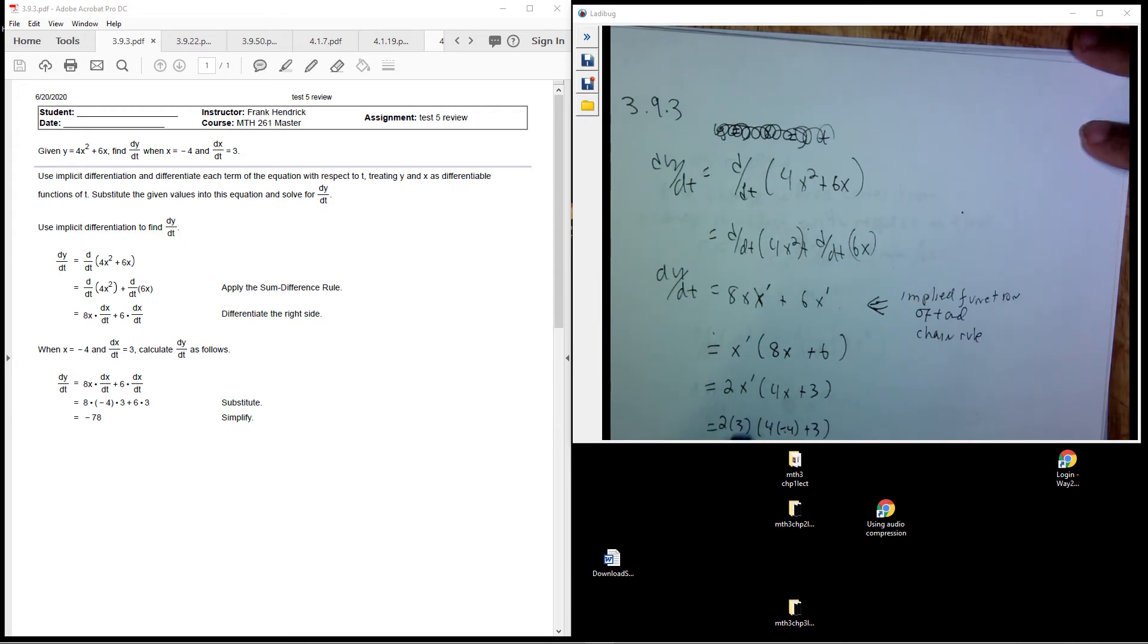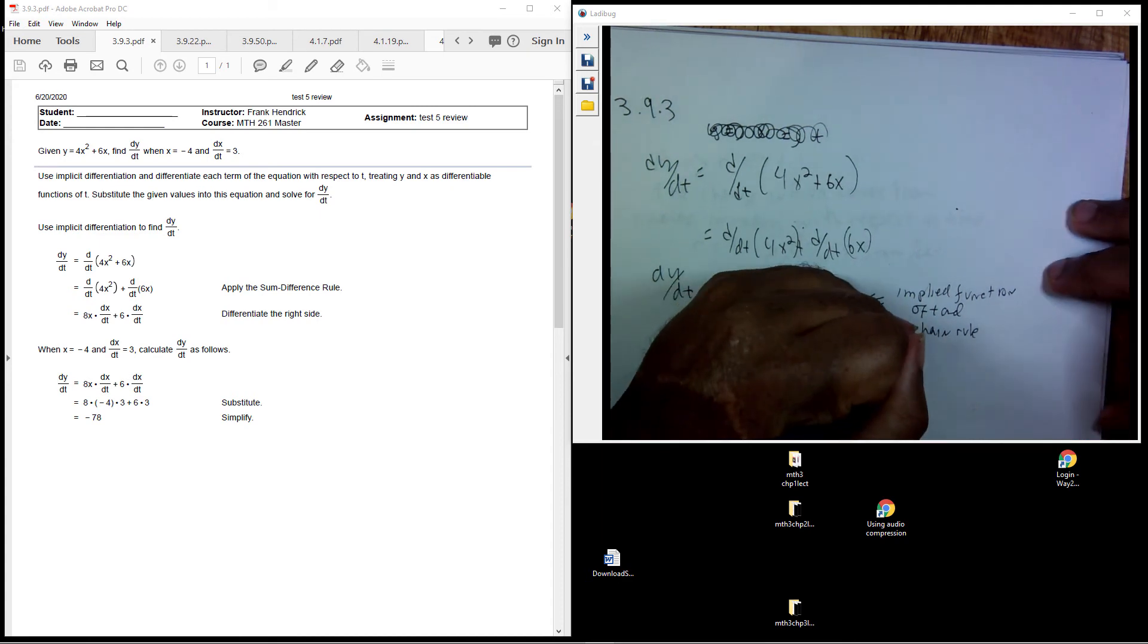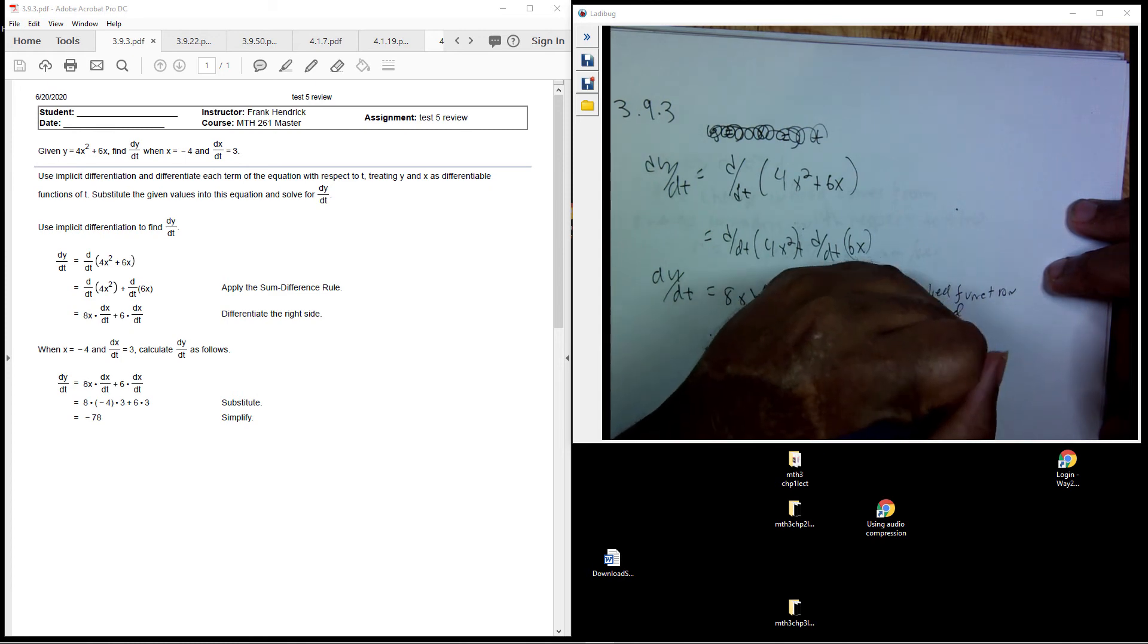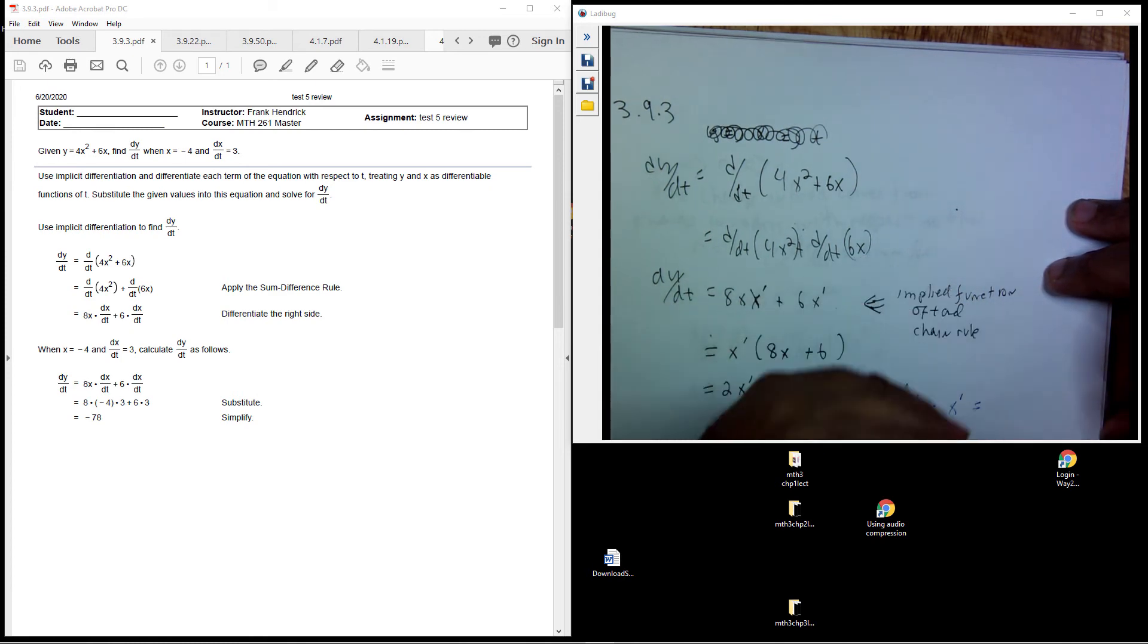So we know what x prime is. X prime is the same thing as dx/dt, so we know that dx/dt is the same thing as x prime, and that's the same thing as 3.